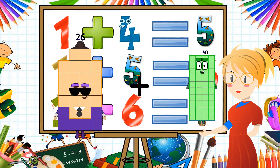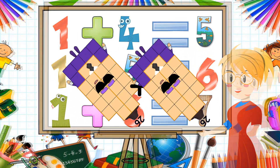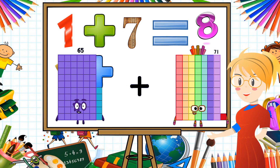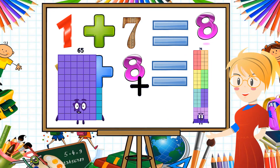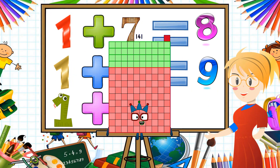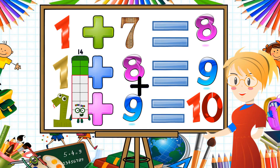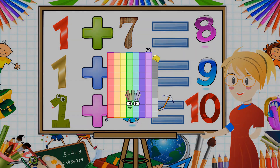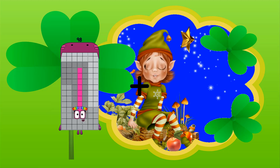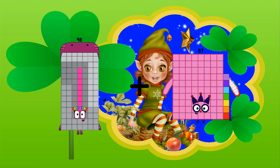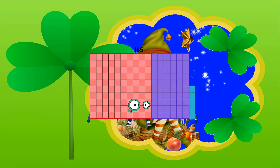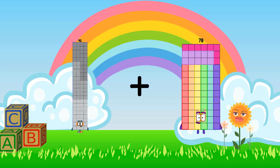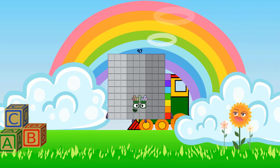26 plus 26 equals 52. 65 plus 76 equals 141. 14 plus 65 equals 79. 98 plus 67 equals 165. 92 plus 5 equals 97.